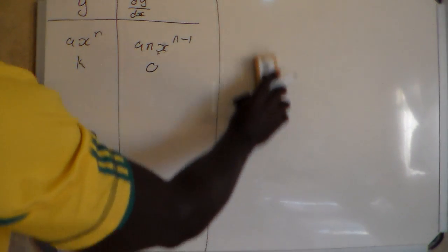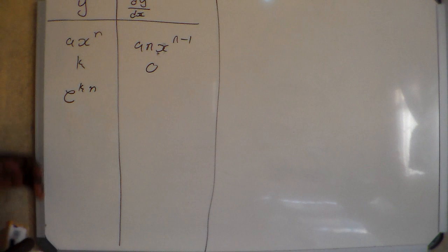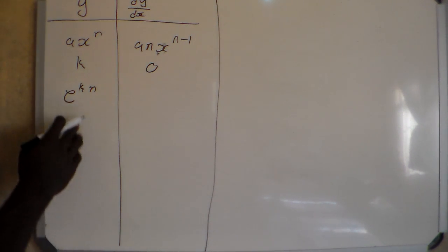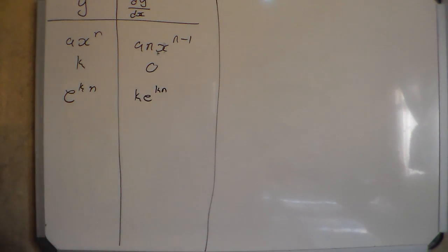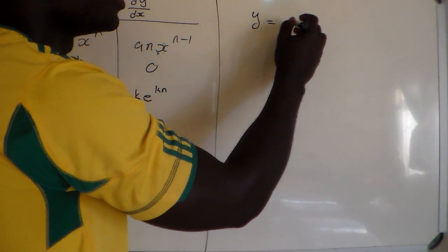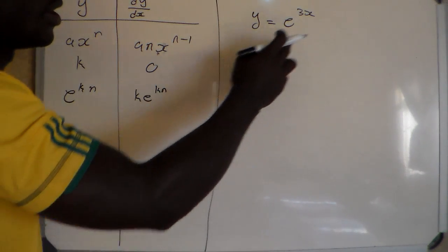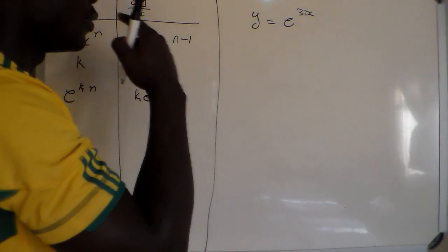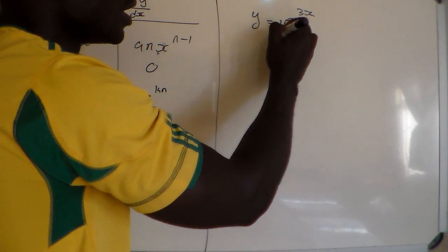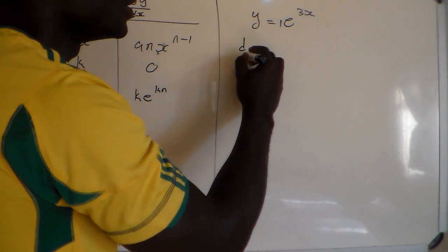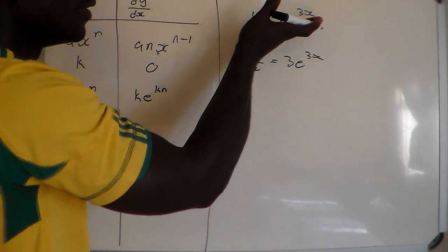Another standard integral: if we have e to the power kx, the derivative of e to the power kx is equal to k times e to the power kx. For example, if y equals e to the power 3x, then k is 3 and x is the variable. So dy/dx equals 3 multiplied by e to the power 3x.